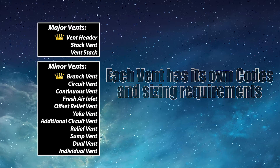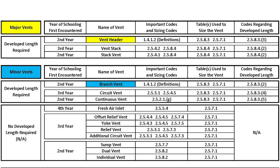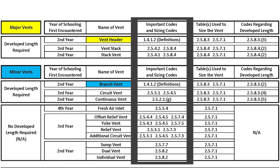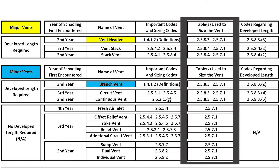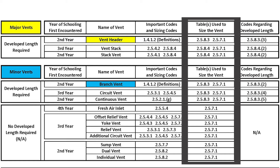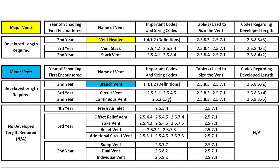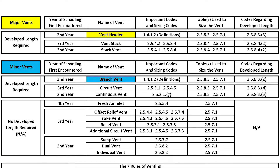Because of all these nuances, I decided to make a table that outlines the year of schooling when you'll first encounter the vent, the different code clauses you'll need to size it, the different code tables you'll need, and whether or not there's a developed length for it. I'm going to make this table available for download in the description below.